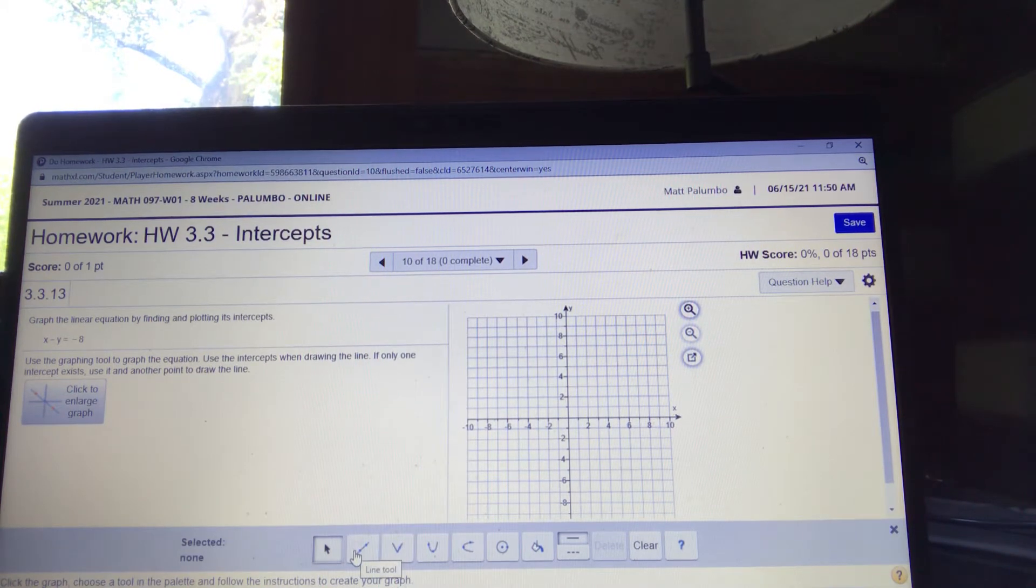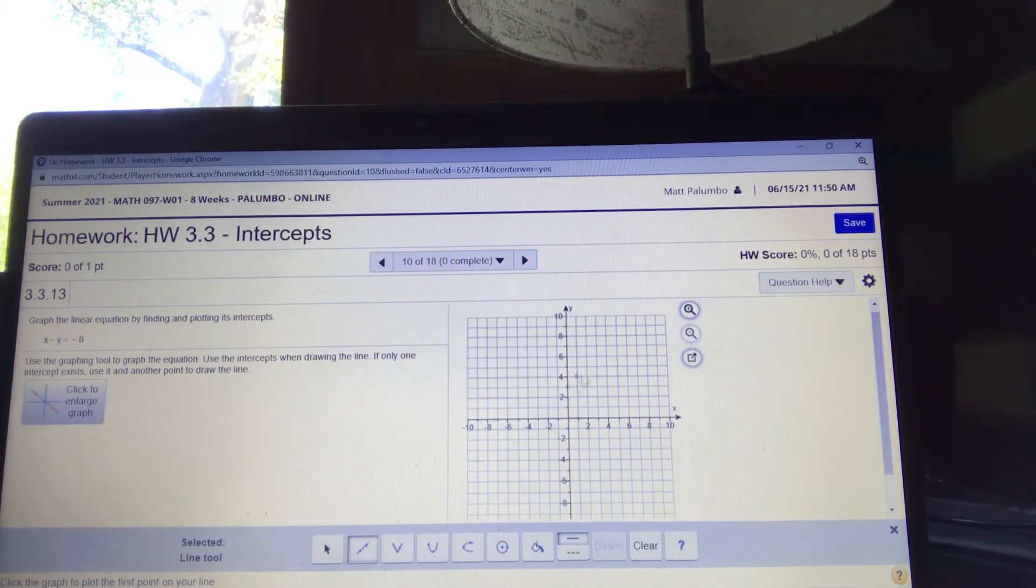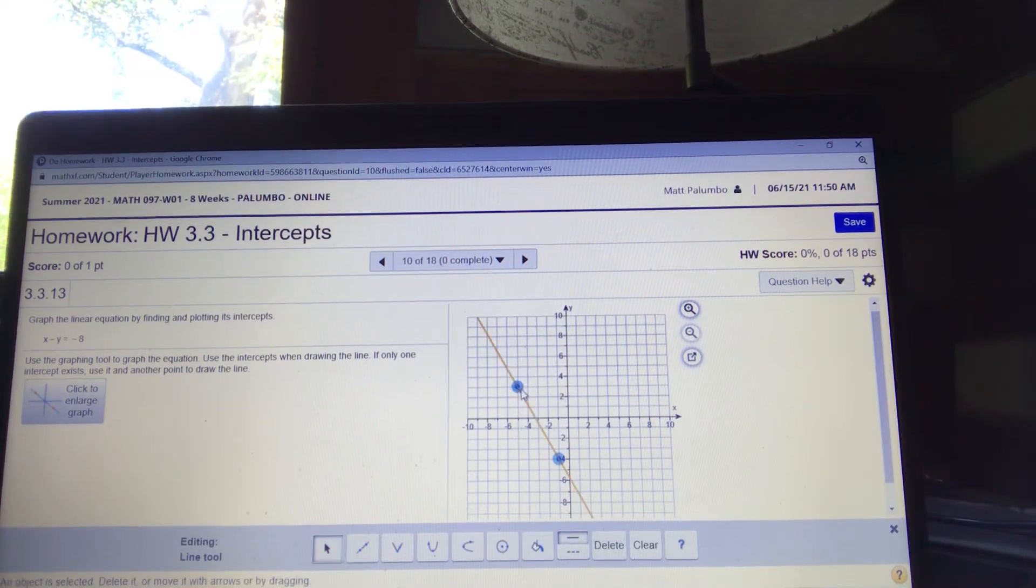Okay. And this will allow you to draw a line or an absolute value or a parabola or a horizontal parabola or a circle. I'm going to grab the line because I want to draw a line as a linear equation. And now, when I click on here and I click two points, you see it makes a line?